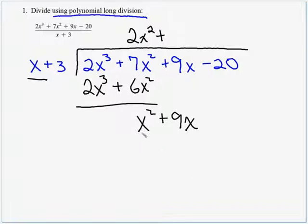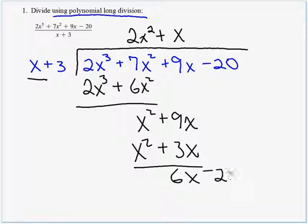All right, what times this x is x squared? Well, that's got to be x. And we multiply x squared plus 3x, and we subtract. 6x minus 20.